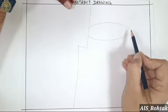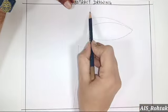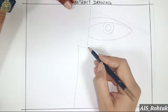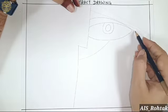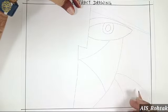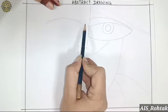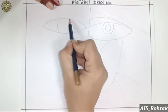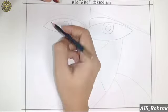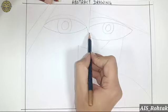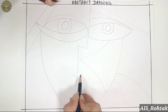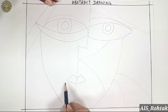First we divide the sheet in half, then draw an eye, then we divide this into any lines whichever you want. I'm drawing a face and dividing it into any random parts.